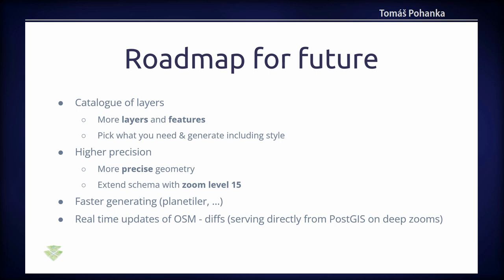Looking at the roadmap for the future: OpenMapTiles should become more of a catalog of layers, so you can choose which layers to include in your vector tiles and generate exactly what you want to see. Better precision of geometry is also a goal — especially visible in buildings at zoom 14-15 where there can be gaps. And of course faster generating and real-time updates from OpenStreetMap directly.